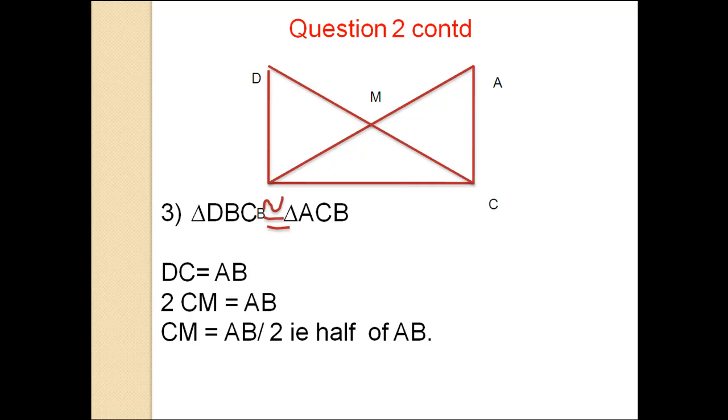DC equals AB. 2 CM equals AB. CM equals AB divided by 2, half of AB.